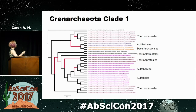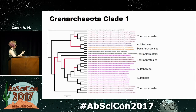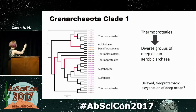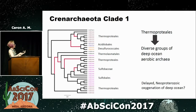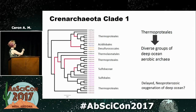Similarly, this is a subclade of Crenarchaeota, and you can see the gene was in the Thermoproteales and then was transferred into some really modern groups — like Sulfolobales and Aeropyrum — which I think diverged in the last 800 million years or so. These represent a bunch of different independent transfer events into aerobic archaea that diverged relatively recently. For example, Aeropyrum is a deep-ocean organism, so this may actually be evidence for a delayed neoproterozoic oxygenation of the deep ocean — these organisms didn't see oxygen, then suddenly they do, they need to protect themselves from it, they acquire this gene, and are then selected for.